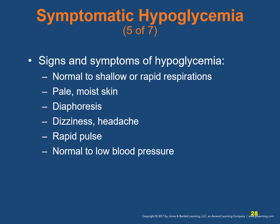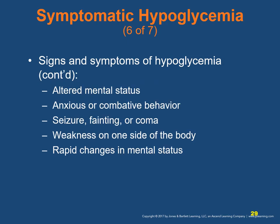Signs and symptoms of hypoglycemia include normal to shallow respirations, pale, moist, and clammy skin, diaphoresis, dizziness and headache, rapid pulse, and normal to low blood pressure. Patients may also have an altered mental state — aggressive, confused, or lethargic — or unusual behavior, anxious or combative behavior, seizure, fainting, coma, and weakness on one side of the body that may mimic stroke.